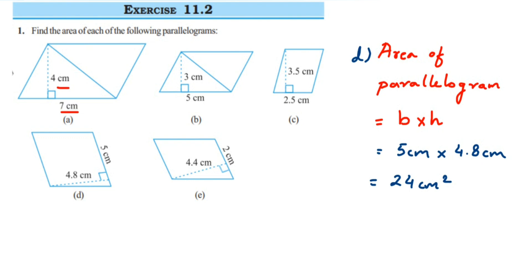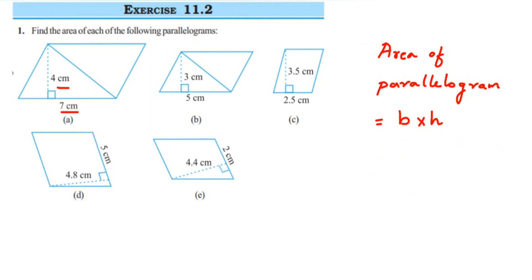The last one is similar to problem D. The line makes a 90-degree angle with the base, so that is the height at 4.4 centimeters, and the base is 2 centimeters. Substituting: 2 × 4.4 = 8.8, so the area is 8.8 centimeter square.